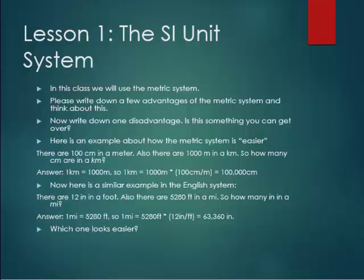But let me show you a little example here that will show you how the metric system is easier. There are 100 centimeters in a meter. Also, there are 1,000 meters in a kilometer. So how many centimeters are in a kilometer? Let's look at the solution. One kilometer equals 1,000 meters, so then if I write that again, one kilometer equals 1,000 meters times my conversion between centimeters and meters, I get 100,000 centimeters. As you can see, that's a pretty straightforward example, and some people can even do that without a calculator.